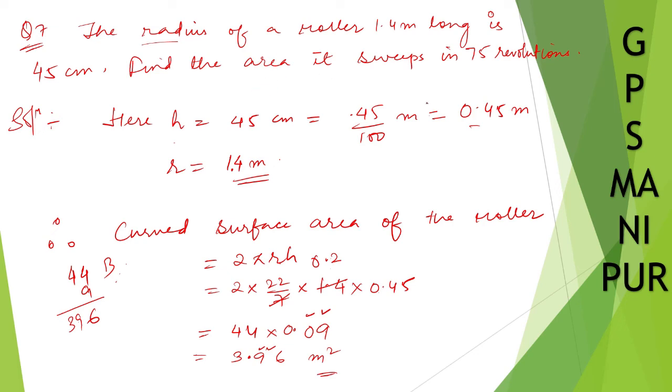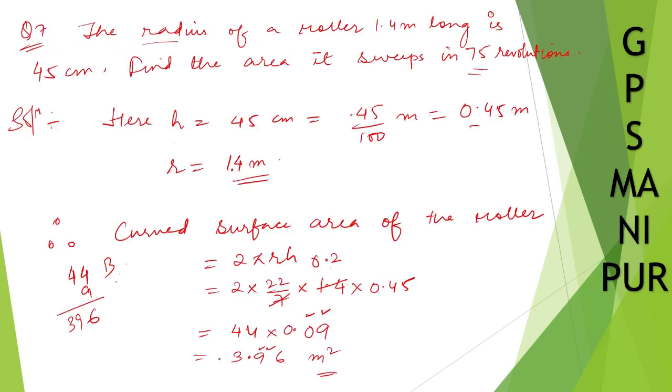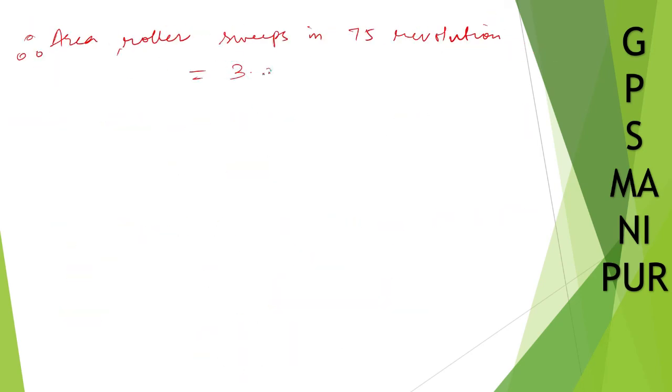Now find the area it sweeps in 75 revolutions. Area roller swaps in 75 revolutions will be equal to curved surface area, which is 3.96, into 75.